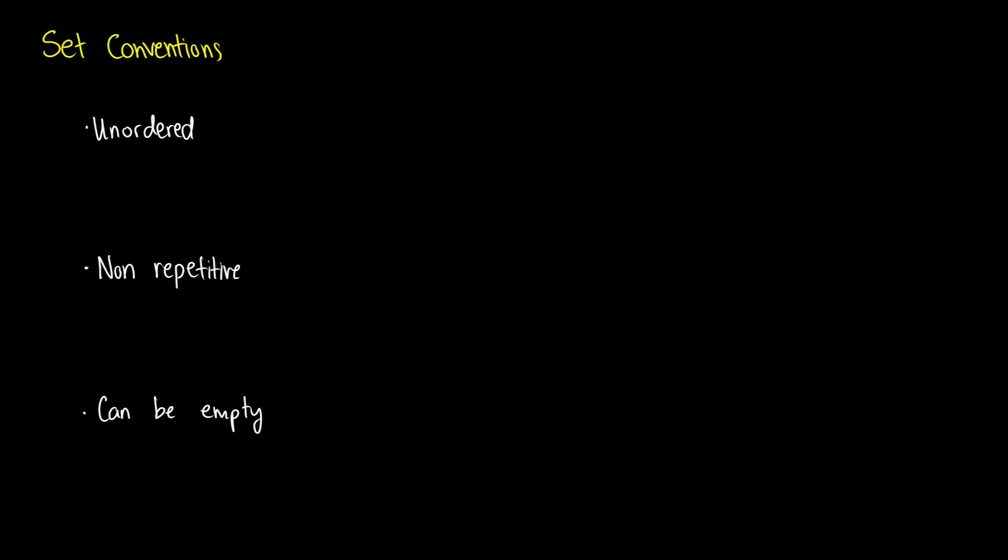Now, there's a couple of conventions with sets, and that is that they're unordered. So if we have a set that contains the letters A, B, and C, it doesn't matter what order we put them in. This can be the same thing as C, B, A. That's because in our representation as a circle, we don't really have an order in a circle.